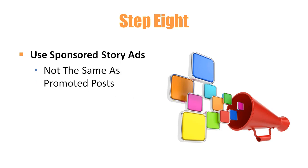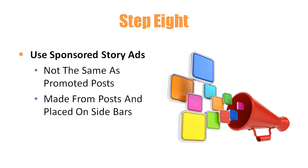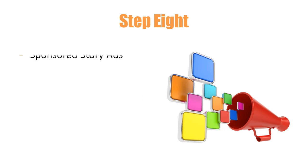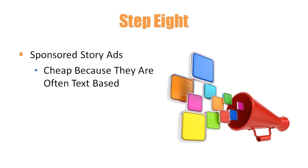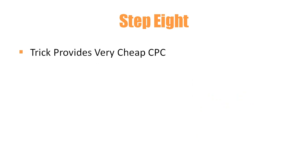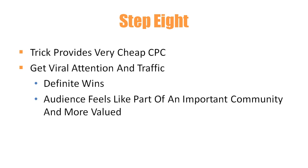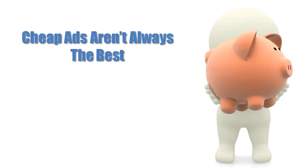Step 8: Use sponsored story ads. These are not the same as promoted posts — they are ads made from your posts and placed on sidebars. Sponsored story ads are cheap because they are often text-based, but they can bring in a lot of traffic directly to your page. Not only does this provide a very cheap CPC, but you also get viral attention and traffic. Your audience feels like it is part of an important community and feels more valued.